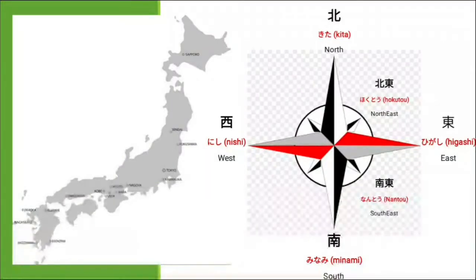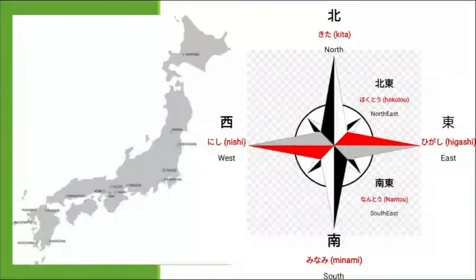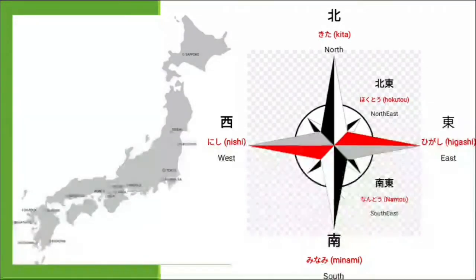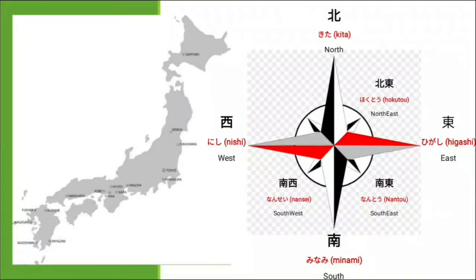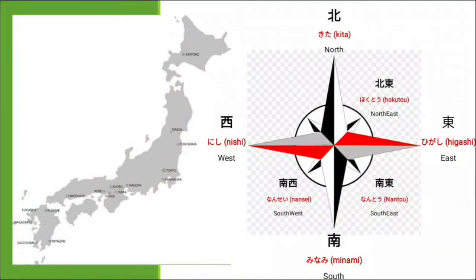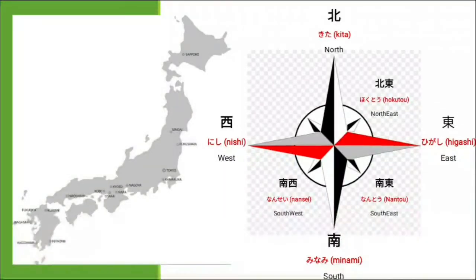Tanong ko sa inyo: ano yung napapansin ninyo doon sa dalawa — sa North-East and sa South-East? Tama. Pareho yung kanilang dulo, which is '-to'. So, kapag East, ang North-East or South-East is '-to' ang kanyang basa. Pag North naman is 'Hoku-'. Pag South is 'Nan-'. You can see here, we have the South-West: the South-West is Nan-sei. Ang mapapansin ninyo, ang Nan-to at ang Nan-sei is the same sa unang syllable which is 'Nan.' Magkaiba lang sila sa second syllable kasi nga, ang '-to' is for the East and ang '-sei' is for the West. So, kapag South is Nan-, kaya sila Nan-to and Nan-sei.